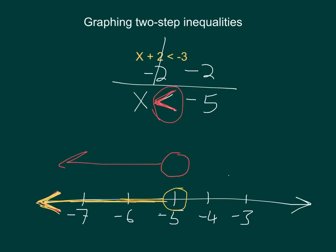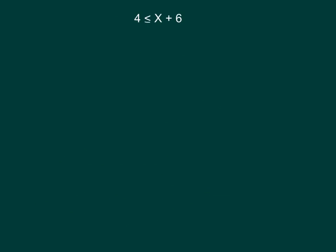That's how we do a two-step inequality. Here's a slightly trickier example. This time the variable is on the right-hand side. 4 is less than or equal to x plus 6.